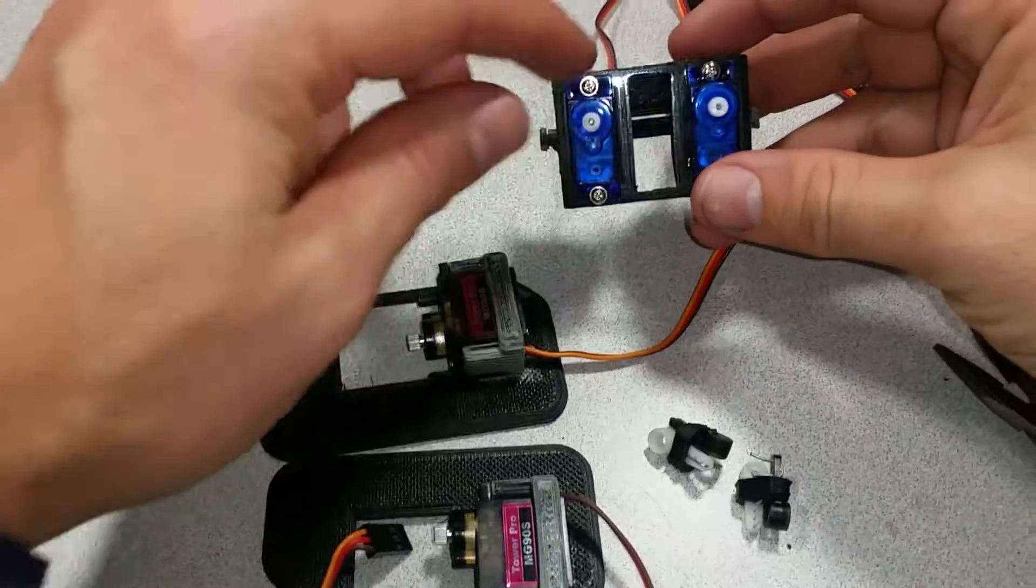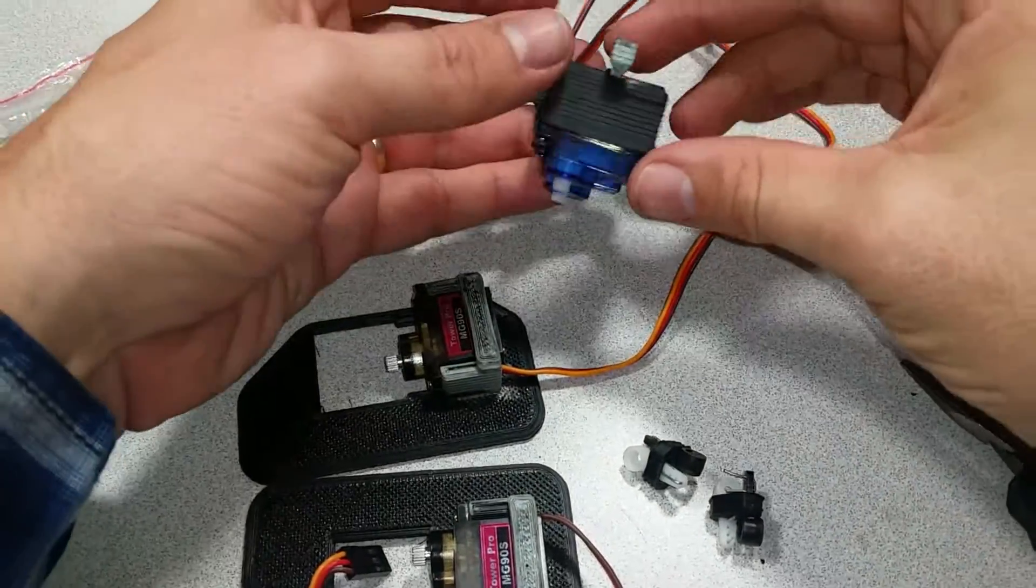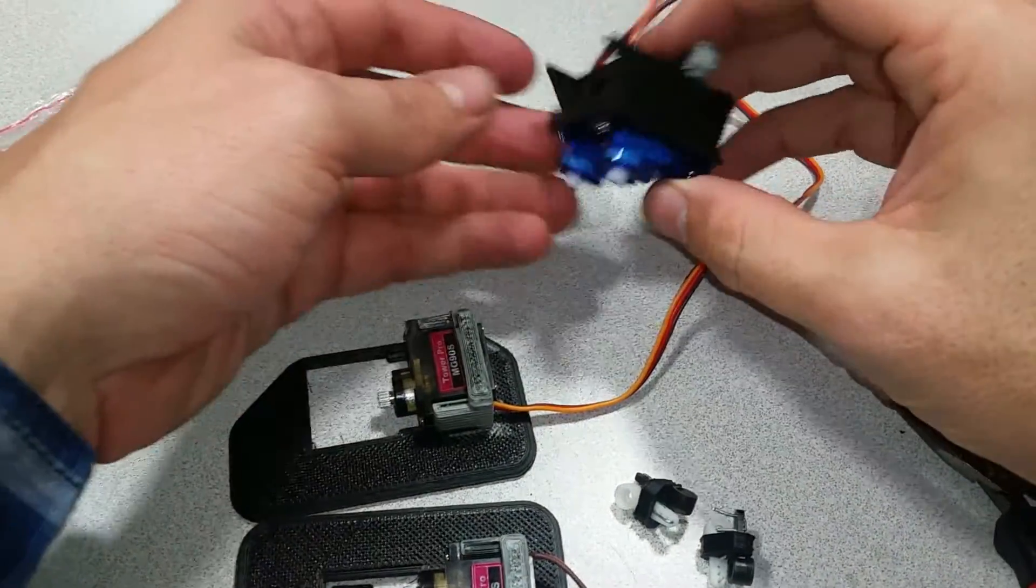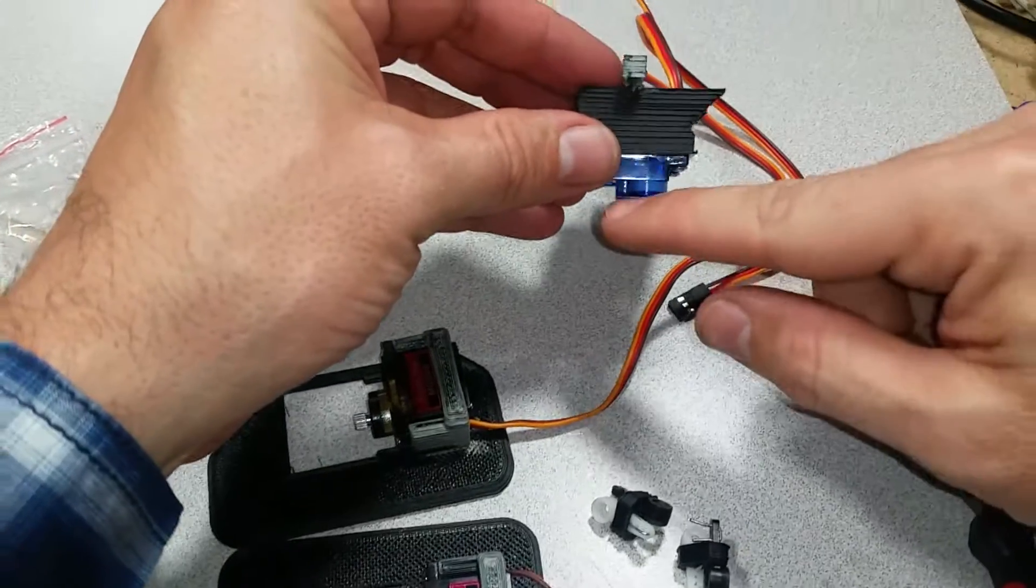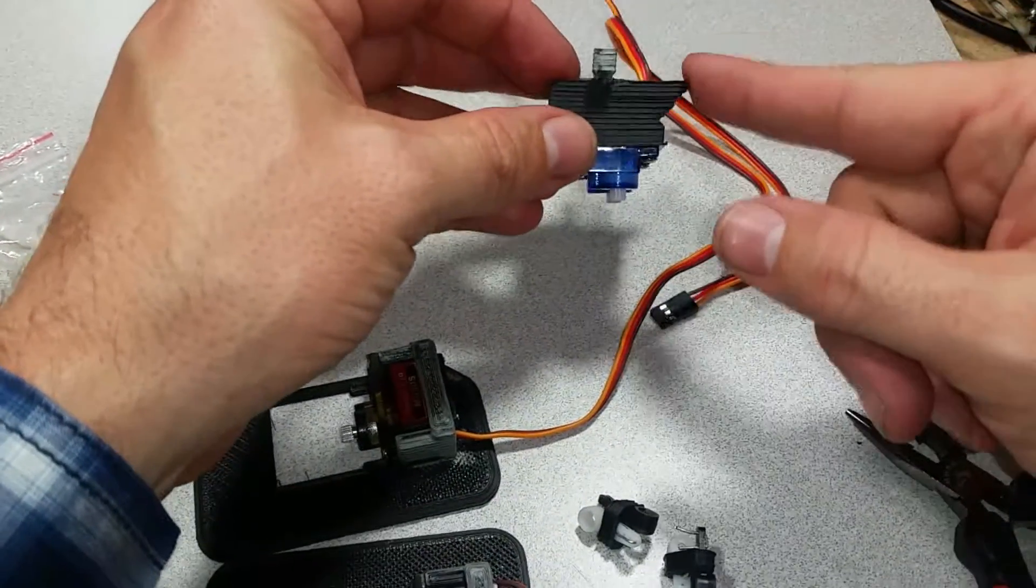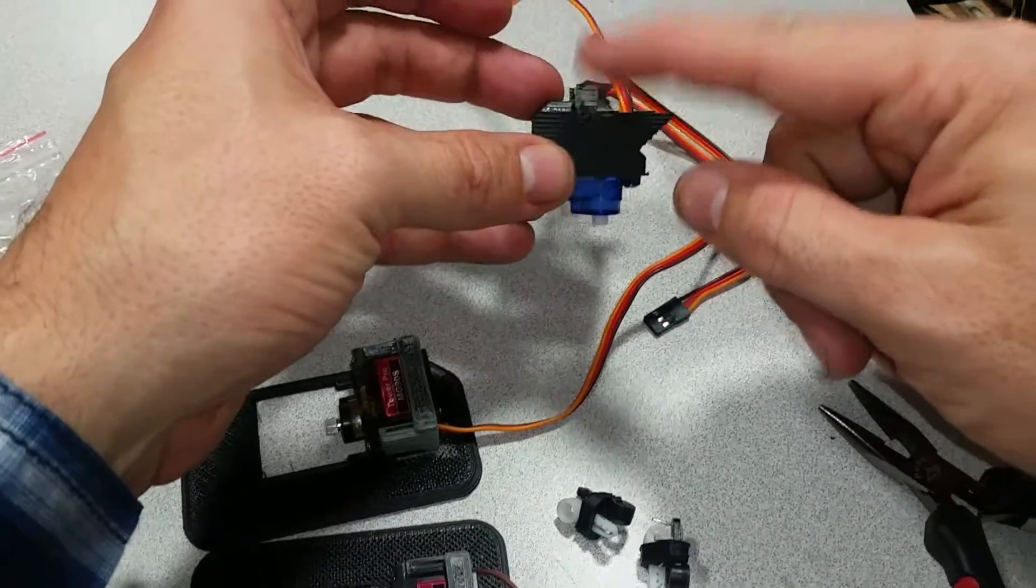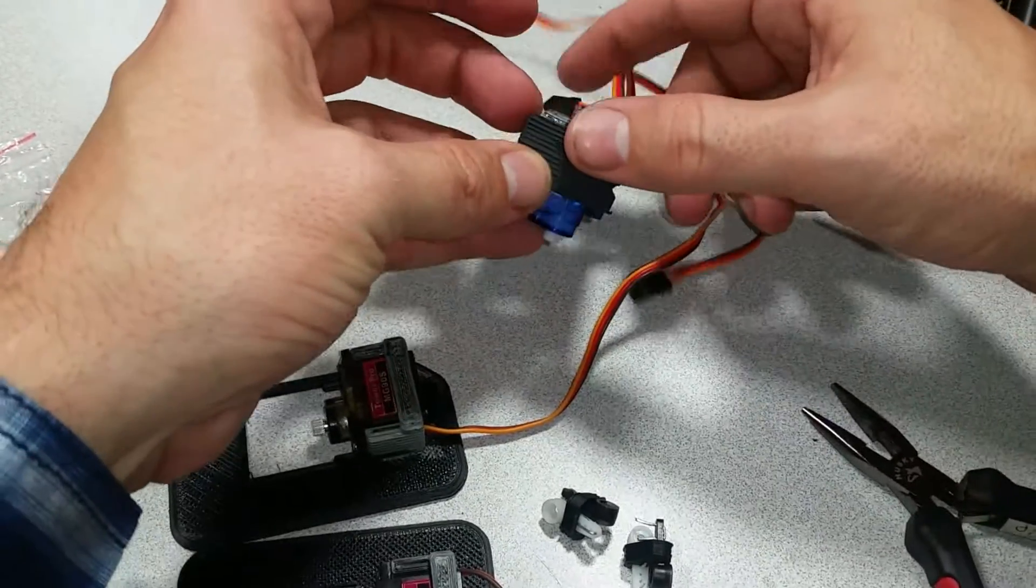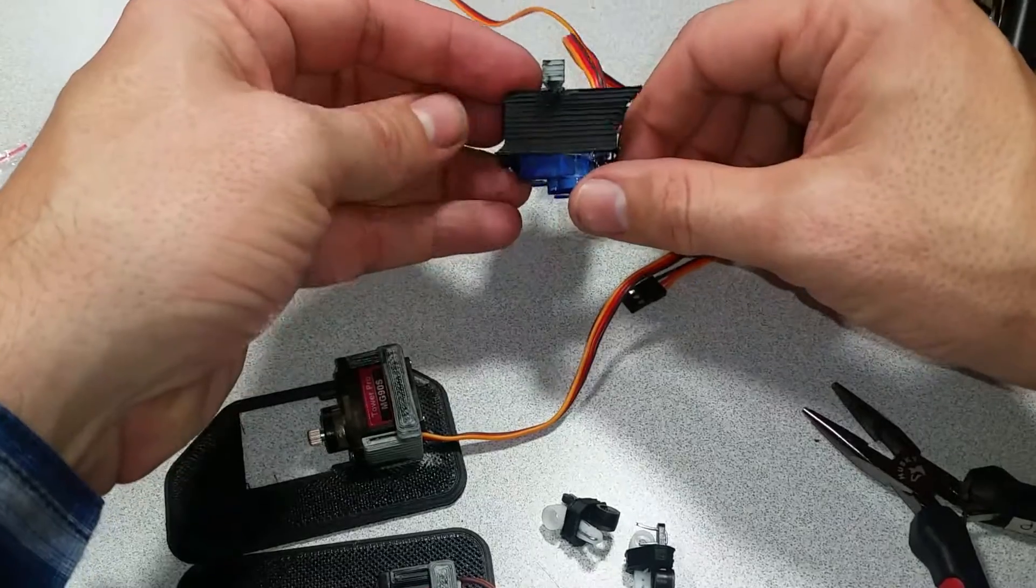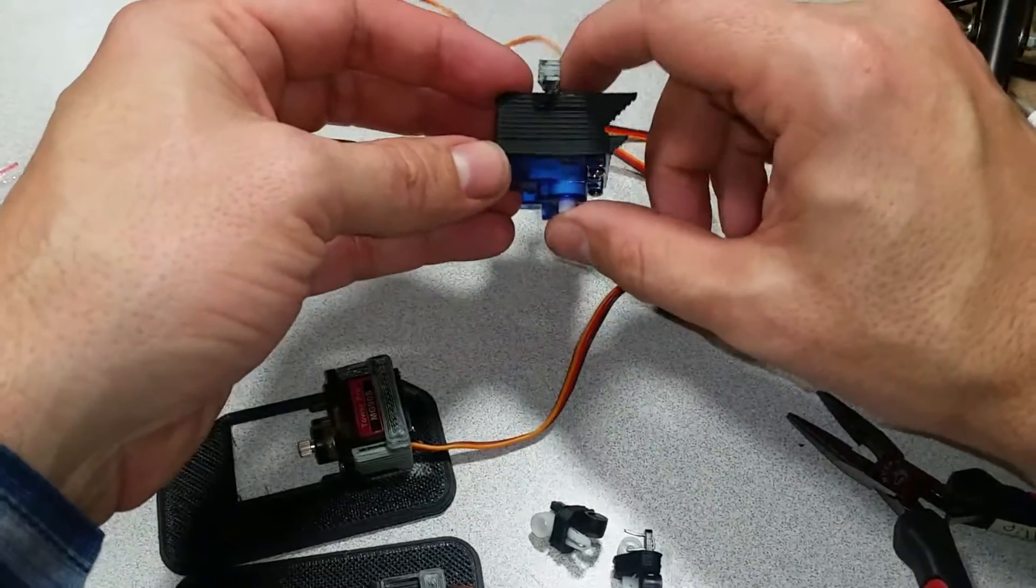Once you have the servos screwed in, it should look like this. The axles of the servos, this is the front side of the robot. The axles of the servos should be just slightly ahead of this bracket up here. If you have it the other way around, you have the servos in backwards.